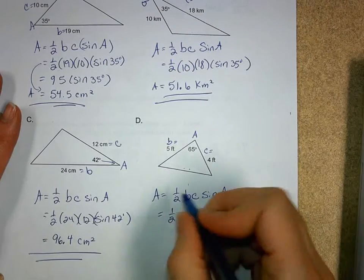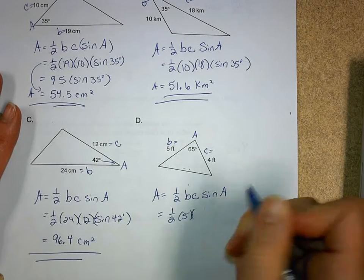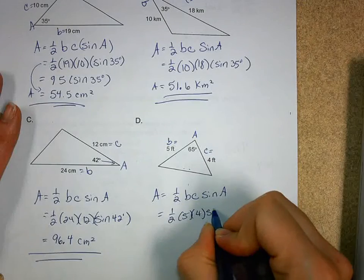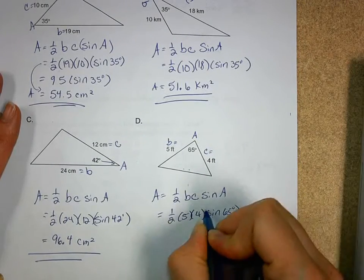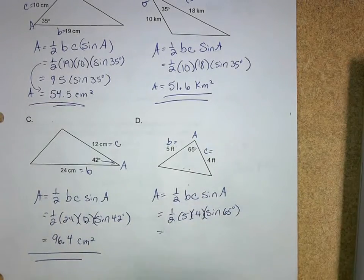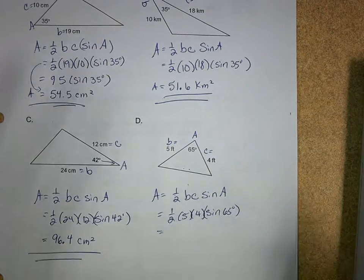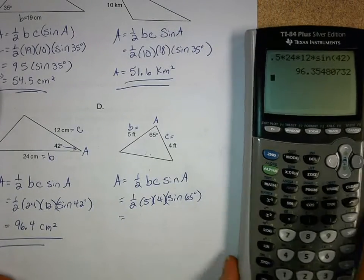So I get one half, B is 5, C is 4, and then I get the sine of 65 degrees. All right? So I get one half of 20, well, let's just don't do that, I'll just plug it into the calculator instead.